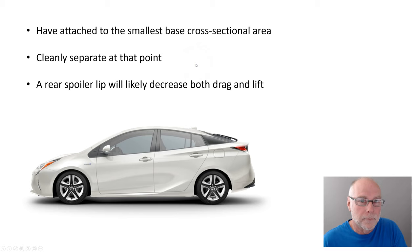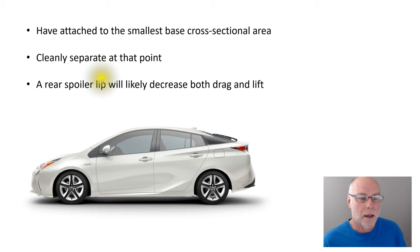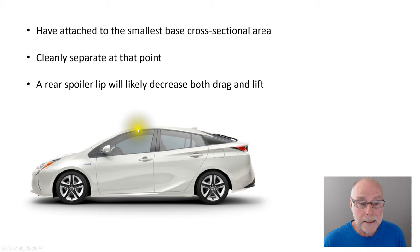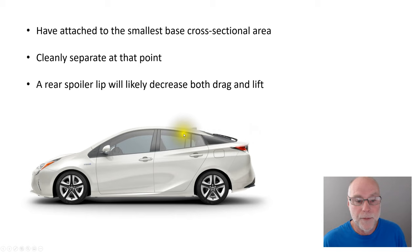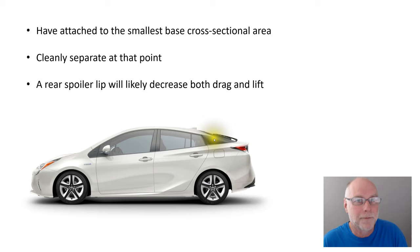So what can we learn from that? Have attached flow to the smallest base cross-sectional area, cleanly separate at that point, and a rear spoiler lip will likely decrease both drag and lift. If we look with new eyes at the Prius — which we saw earlier as an example of a cam tail — we can see they keep attached flow down to a much smaller cross-sectional area than if it was separating at the highest part of the car. They have a flat area there which causes some pressure regain and acts as a de facto spoiler. If they lifted that lip up a little bit more they'd get even more pressure, but it's a juggling act. You can see they're actually following Kamm's original philosophy: keep flow attached to the smallest area, and beyond that you might as well cut it off. There's no magic, though, in a cam tail.